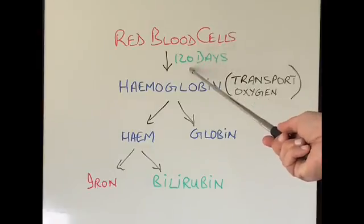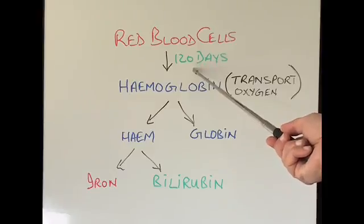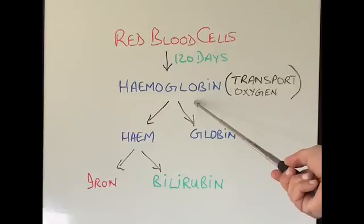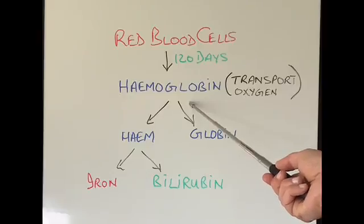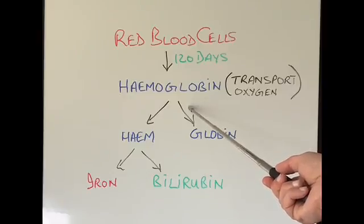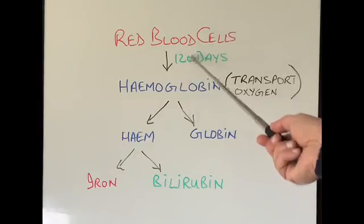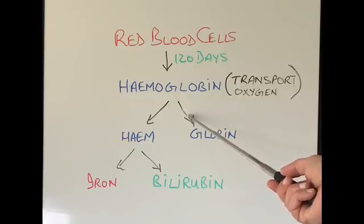These cells live for about 120 days in our body, and after that they die. When they die and break down, they release a substance called hemoglobin. Hemoglobin is very important because it carries oxygen from our lungs to different parts of our body. If hemoglobin is not present, our cells will starve of oxygen and will eventually die.